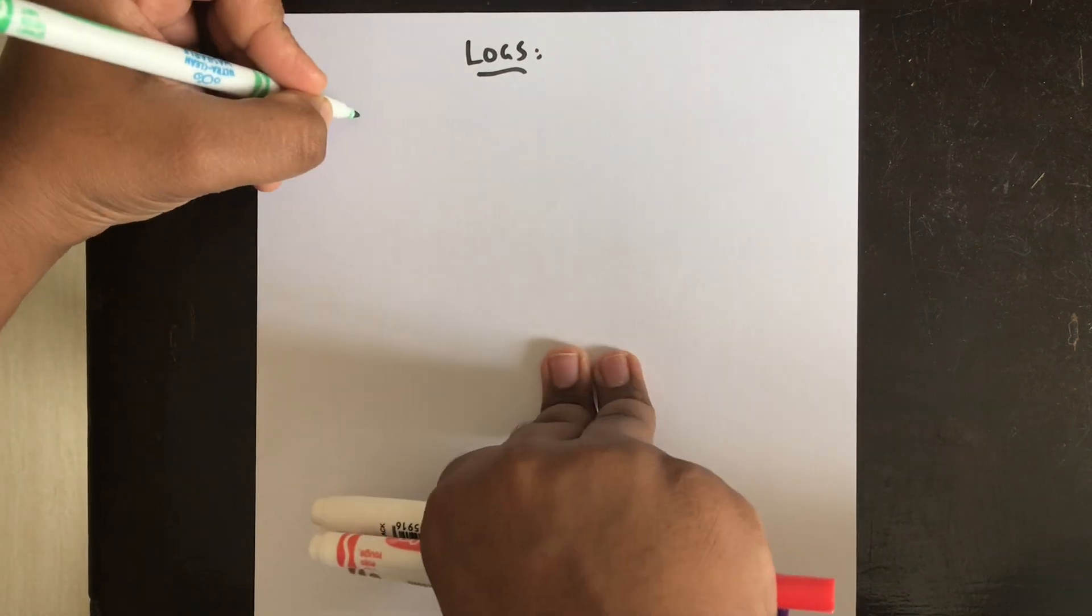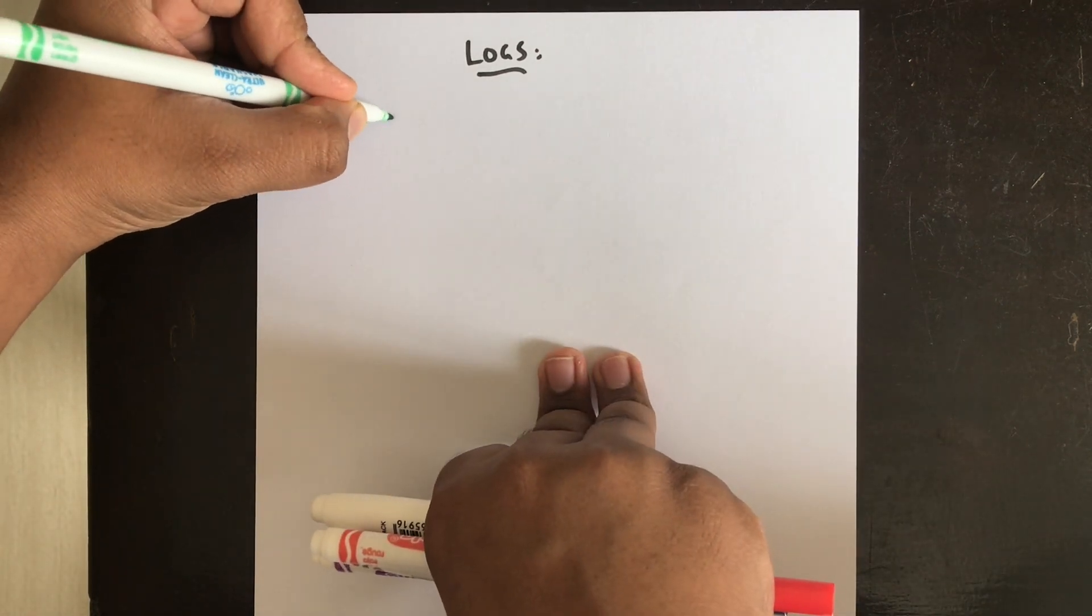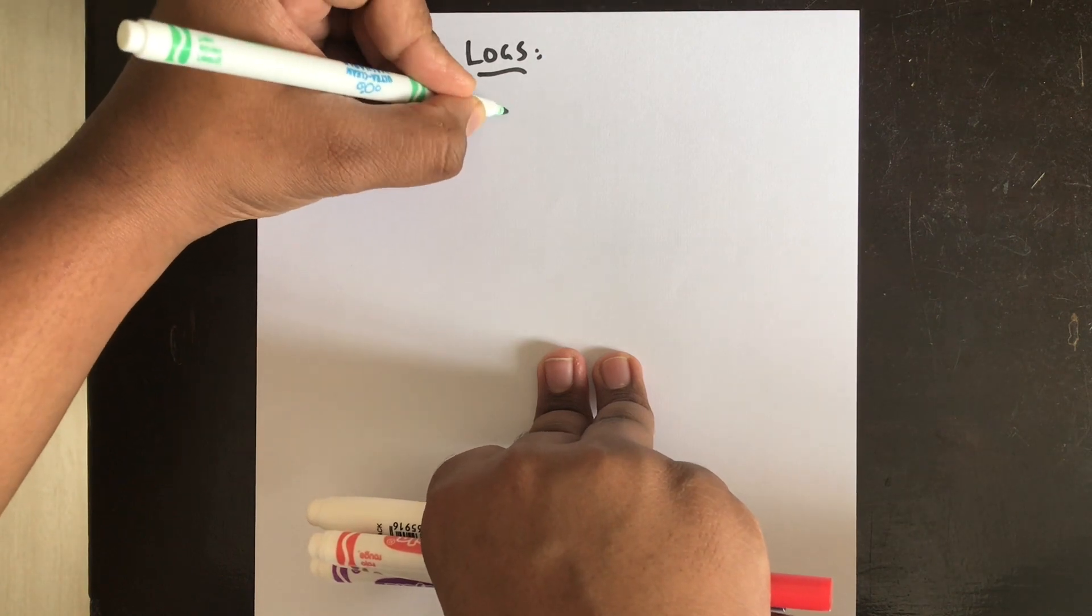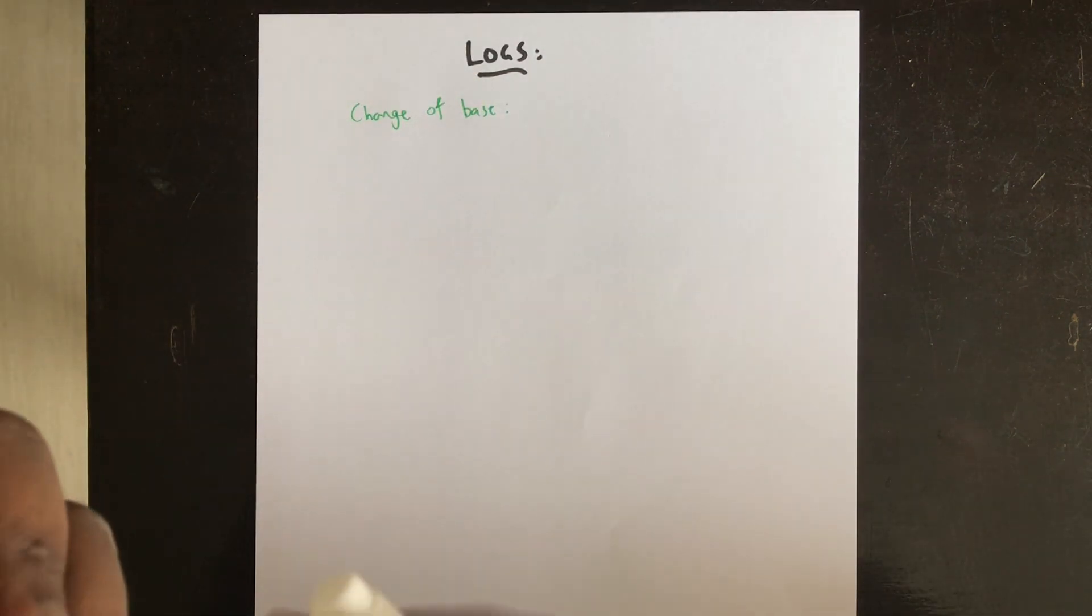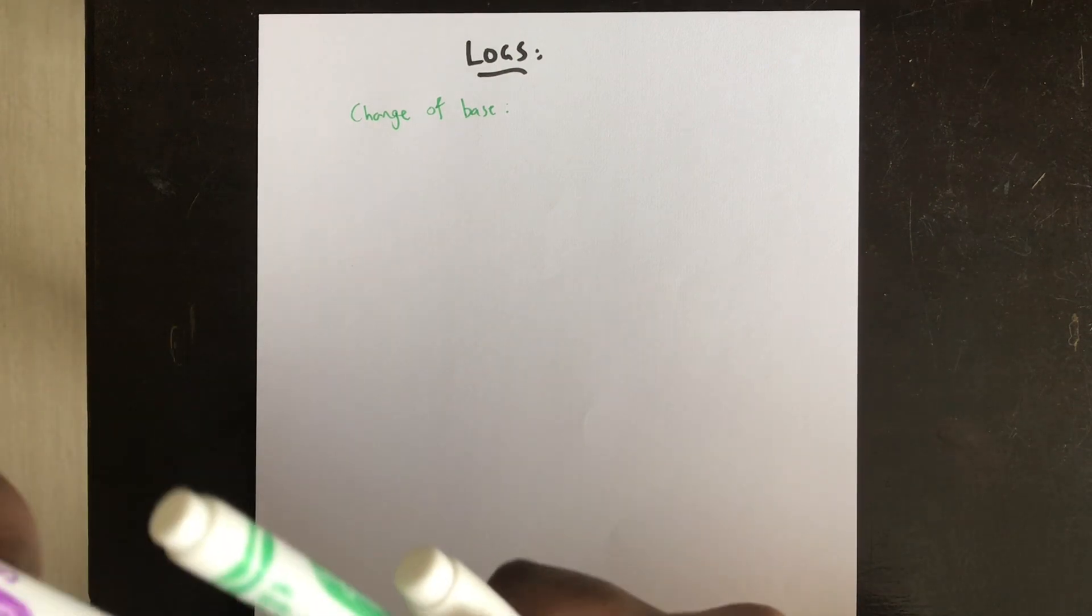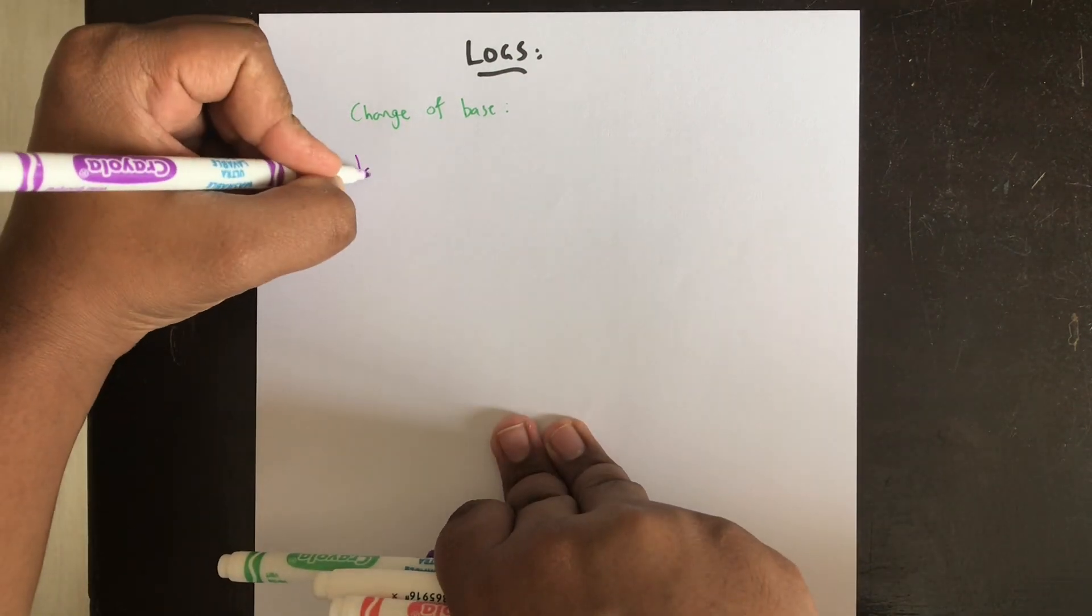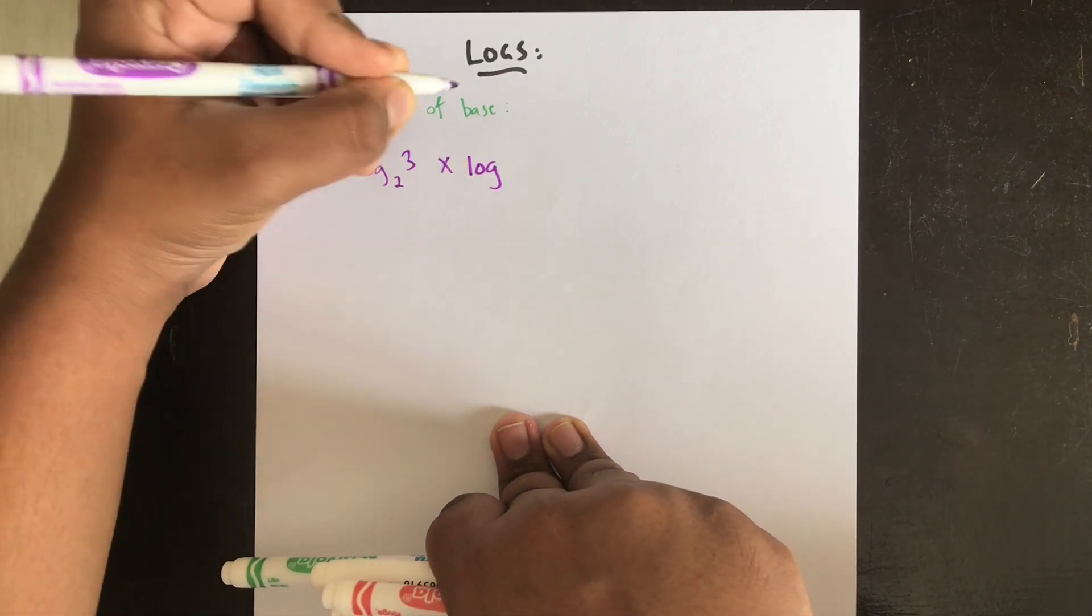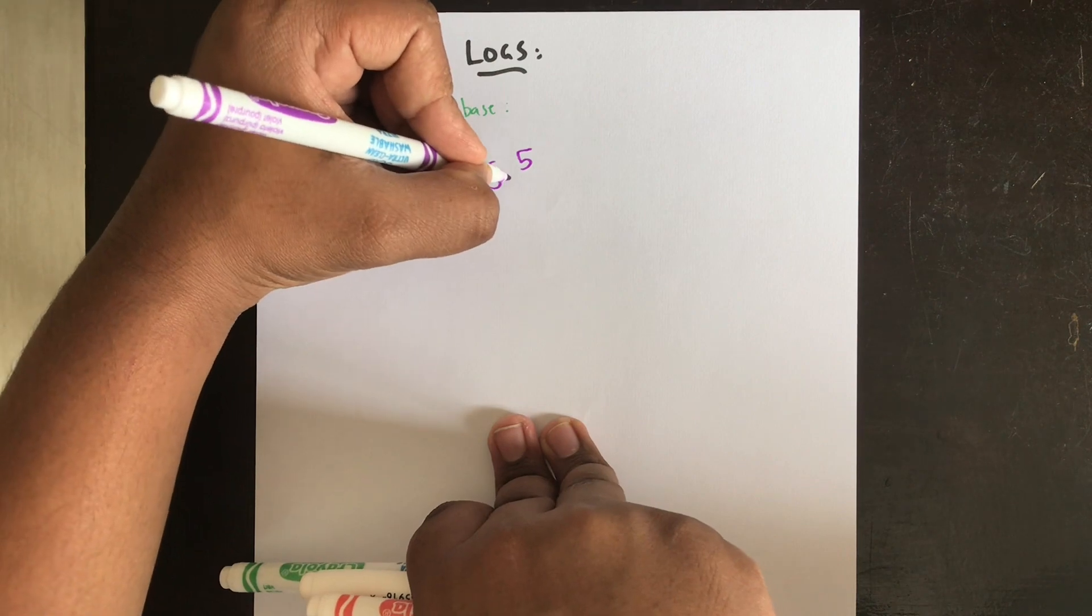Today we'll be learning about the change of base technique for logs. This is very simple and it allows us to compute complex equations with different types of bases. For example, if I have something like log 3 to the base 2 times log 5 to the base 4.